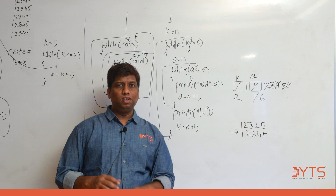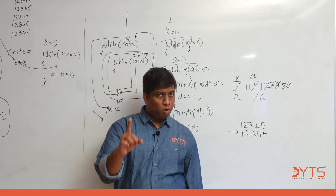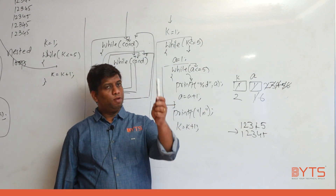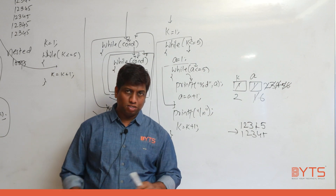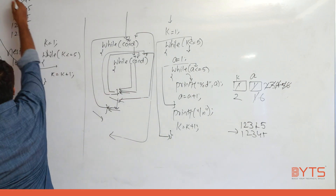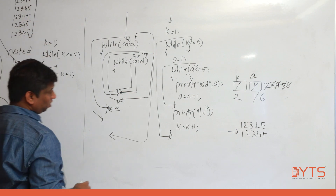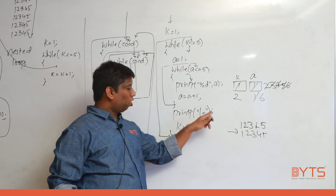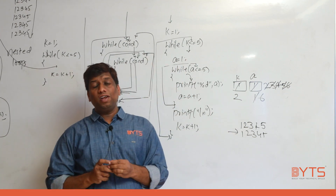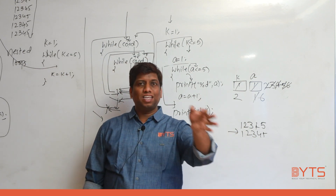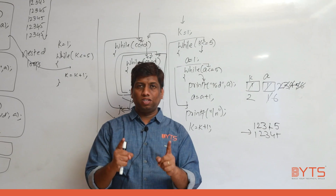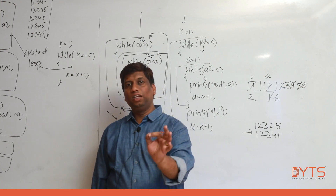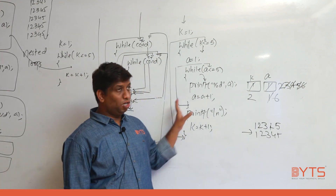One important point: in the Fibonacci series, output went along the x-axis; for the multiplication table, output came along the y-axis. But here, output comes along both x-axis and y-axis. The inner loop takes care of the x-axis; the outer loop takes care of the y-axis. Shortcut: if output is only x-axis or y-axis, use a single loop; if output is both x-axis and y-axis, use a nested loop.